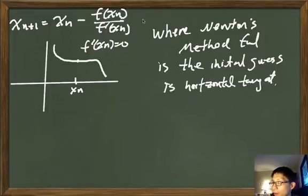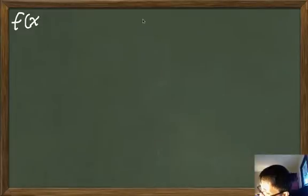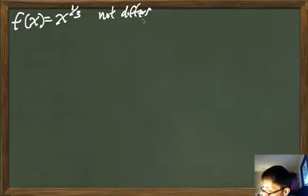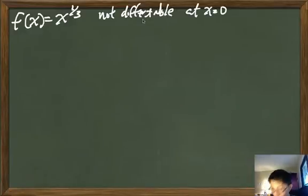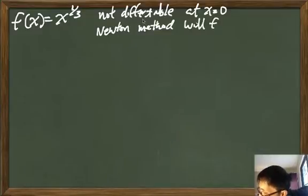There are other cases where Newton's method fails as well. Consider the function f(x) = x^(1/3). This function is not differentiable at x = 0. At x equal to zero, Newton's method will fail to converge — in fact, we call it diverge.